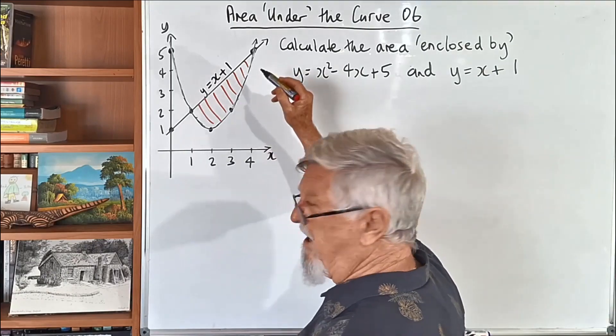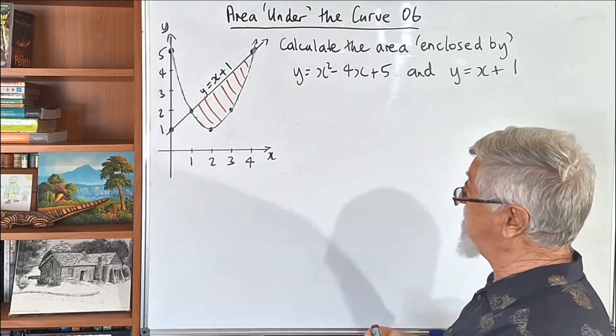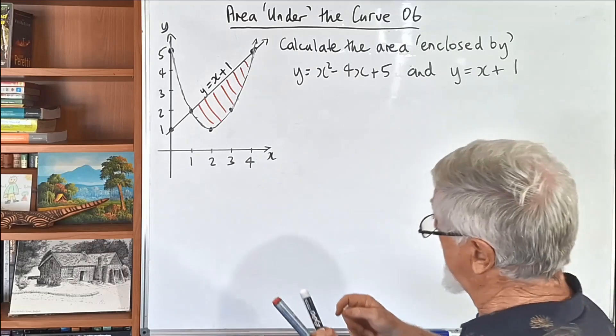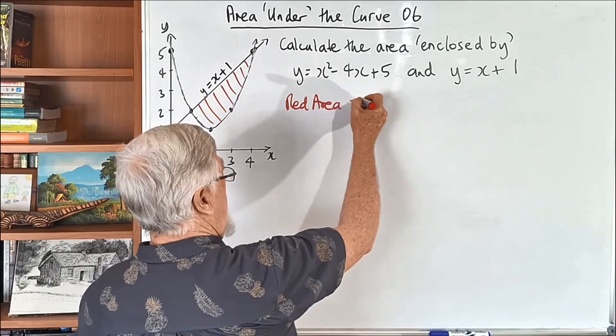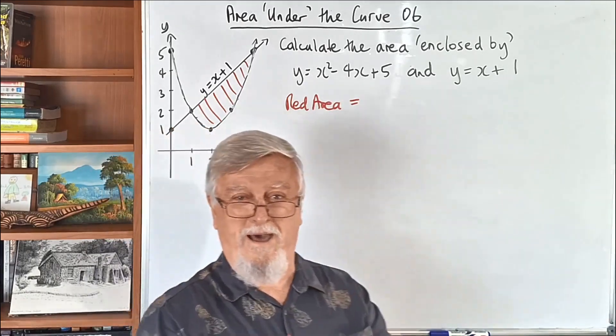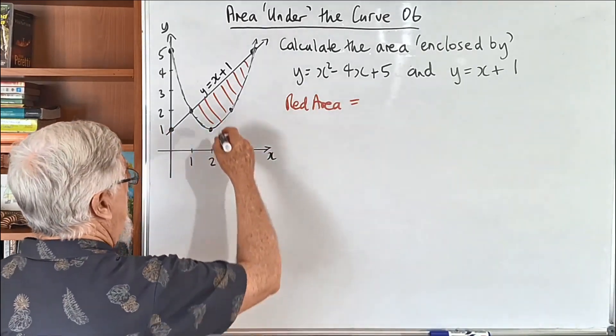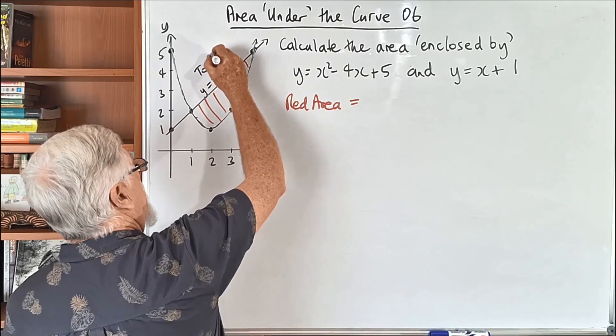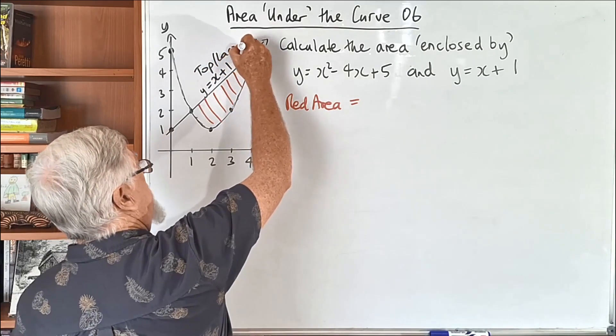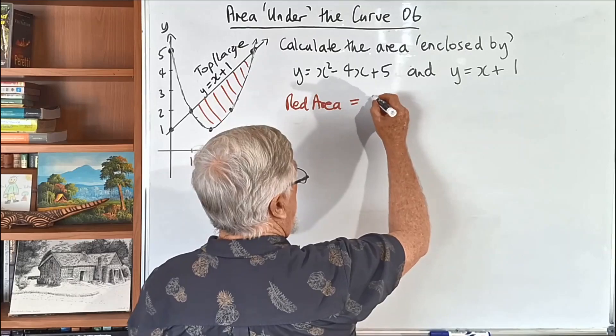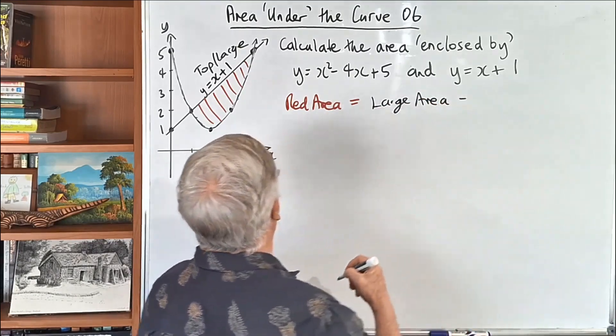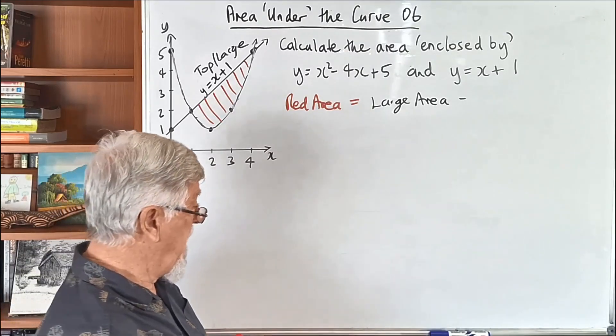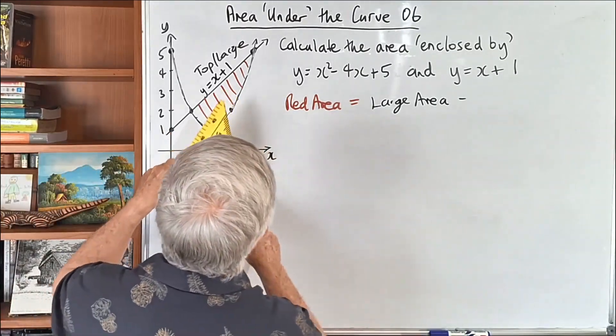It's incredible what happens historically. You'll be able to calculate, accurately calculate the curved area. It is just incredible. So what we're going to do, we're going to talk about the red area, like I did in the other one, and the right red area in red, which is a bit corny. But anyway, I'm having fun with it. So I call this the top or the large area. So we're going to get the large area.